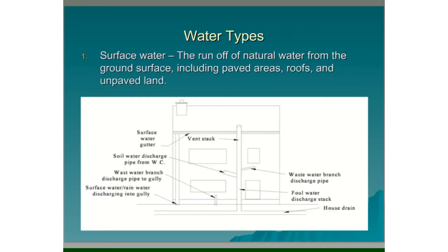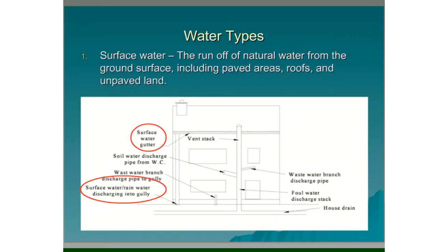Water Types. There are four water types. The first one is surface water. This is the runoff of natural water from the ground surface, including paved areas, roofs and unpaved land. We can see an example in the diagram here — surface water runoff from the roof of the building, collected in a gutter and sent into the downpipe.